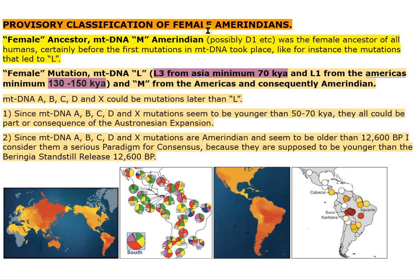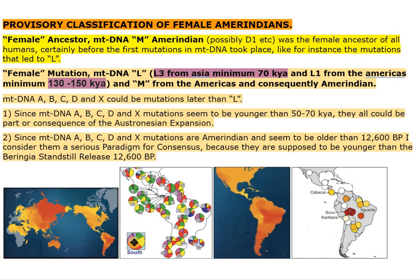Provisory Classification of Female Amerindians: Female ancestor, mtDNA M Amerindian, possibly D1 etc., was the female ancestor of all humans, certainly before the first mutations in mtDNA took place — like for instance the mutations that led to L. Female mutation: mtDNA L, L3 from Asia minimum 70 kya, and L1 from the Americas minimum 130–150 kya, and M from the Americas and consequently Amerindian.